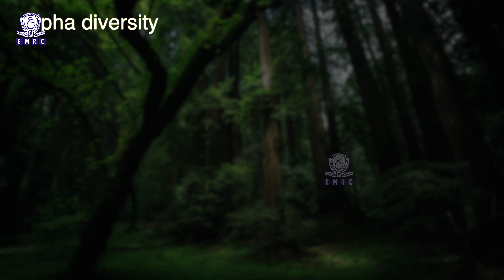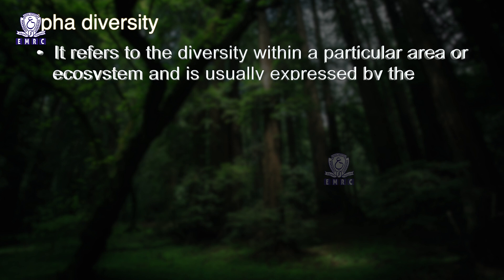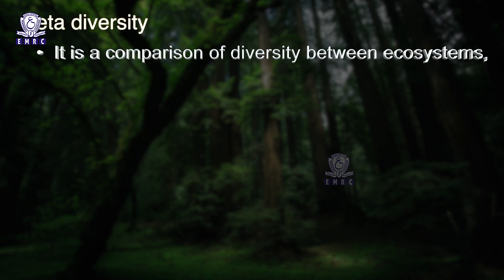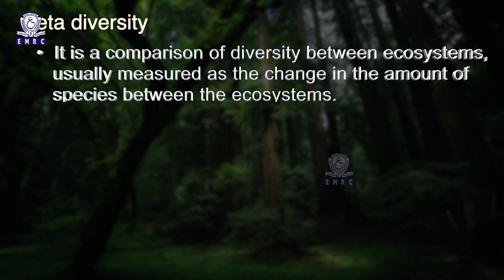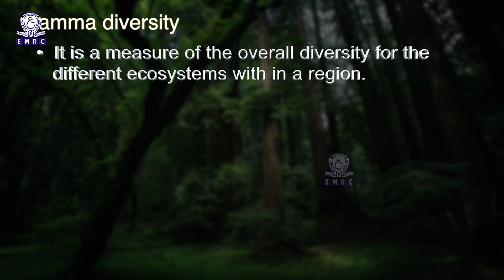Alpha diversity refers to the diversity within a particular area or ecosystem, usually expressed by the number of species — that is, species richness — in that ecosystem. Beta diversity is a comparison of diversity between ecosystems, usually measured as the change in the amount of species between the ecosystems. Gamma diversity is a measure of the overall diversity for the different ecosystems within a region.